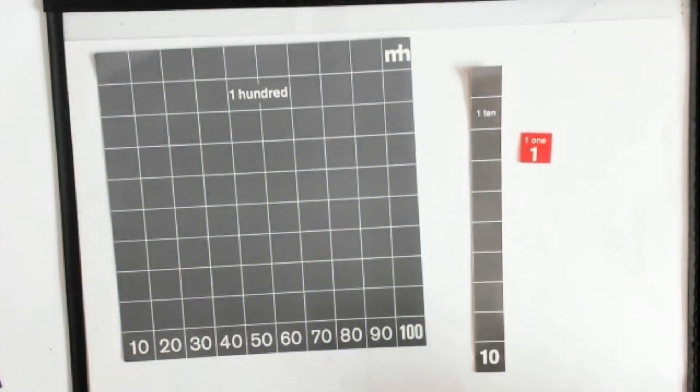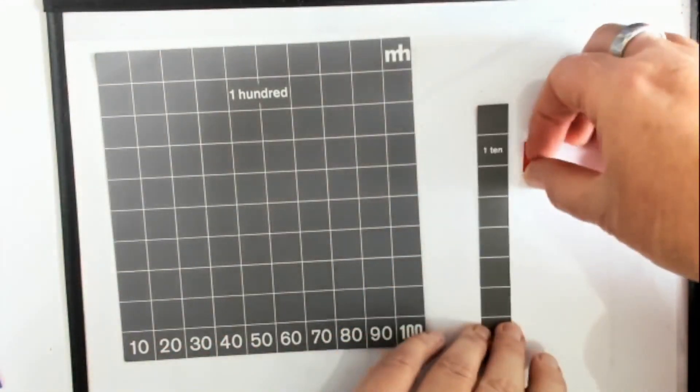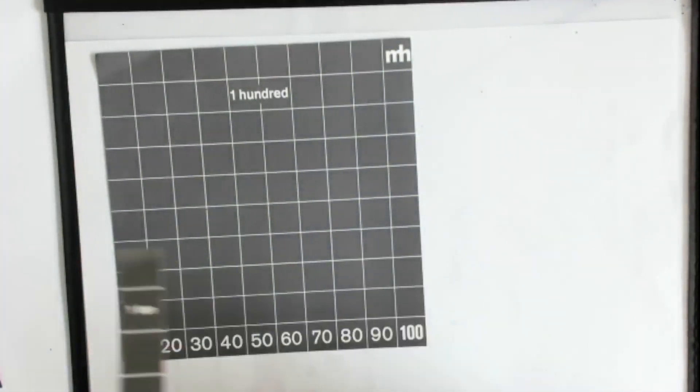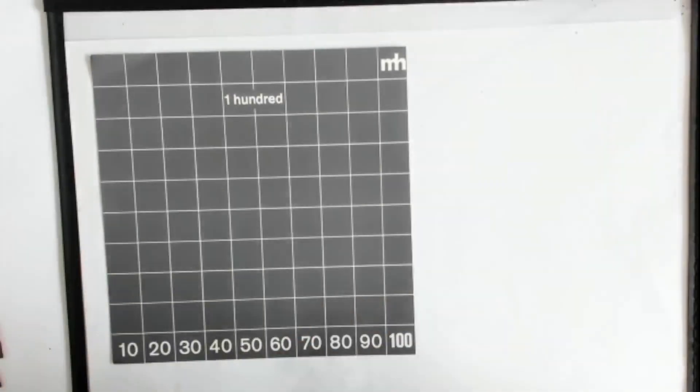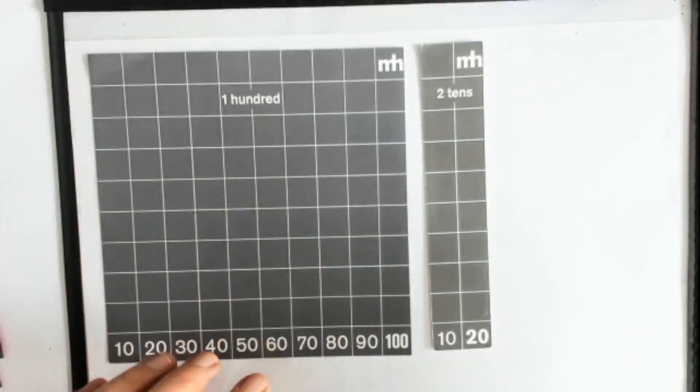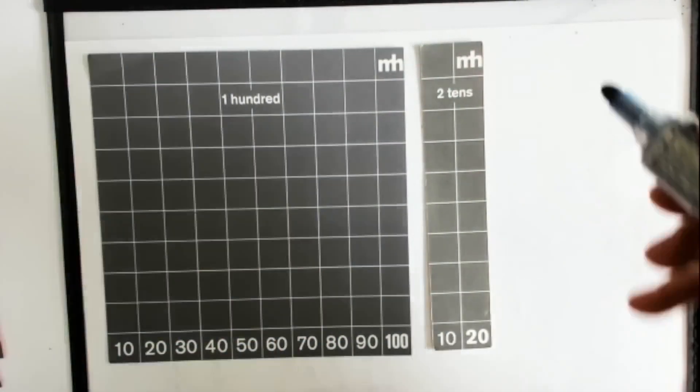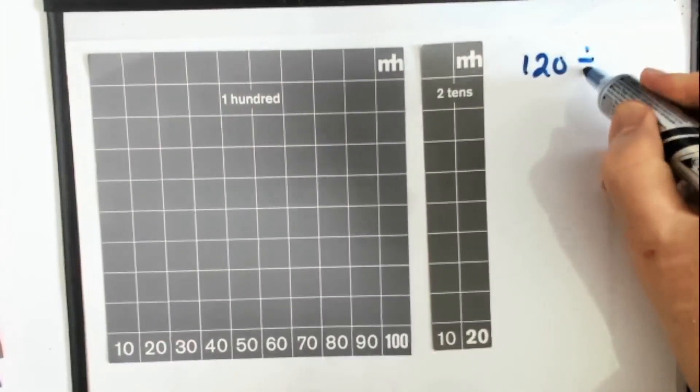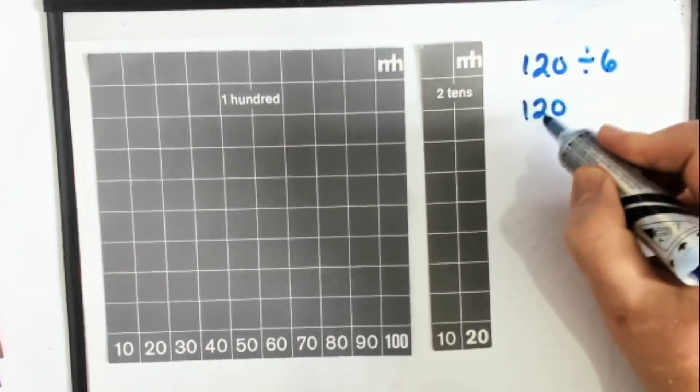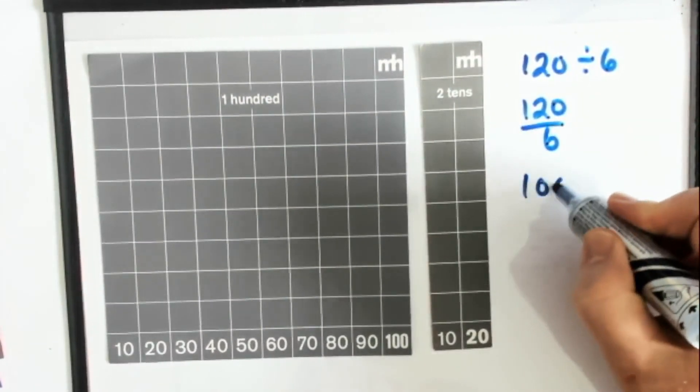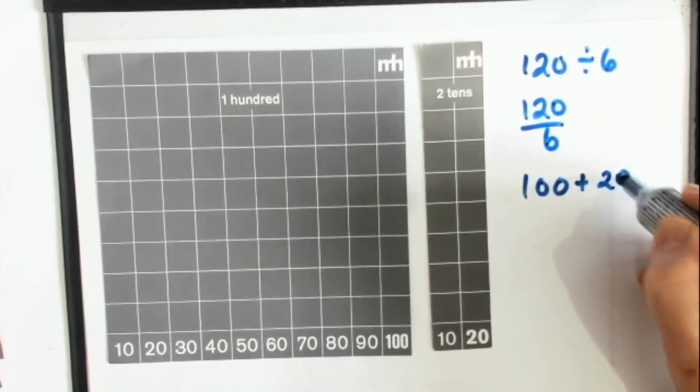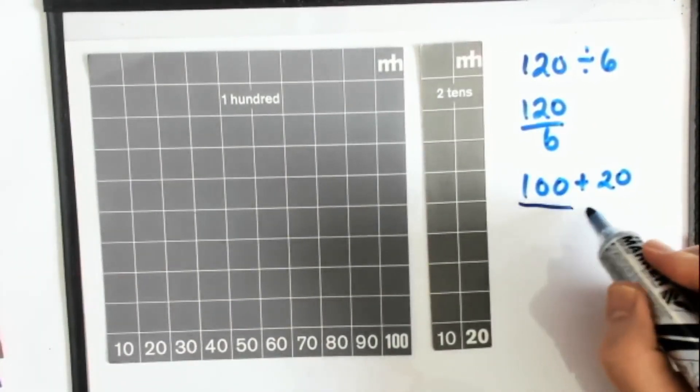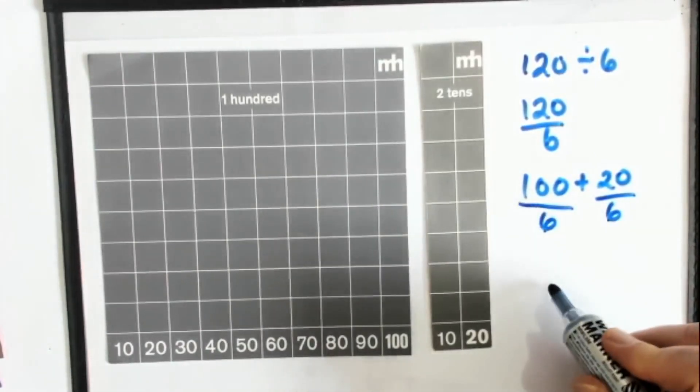And look at it the other way. So for example, if I've got 120 and we're asking our students to divide that by six. You might have something that looks like this or something that looks like this. If we only think additively, our students will really struggle to be able to do that.